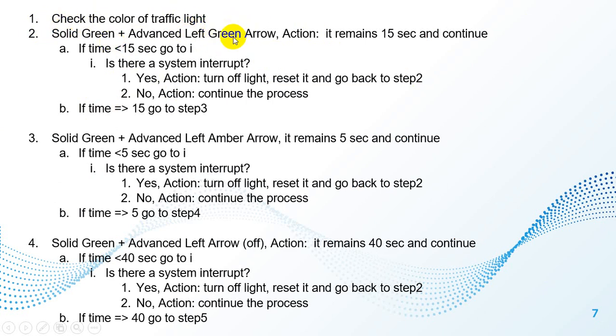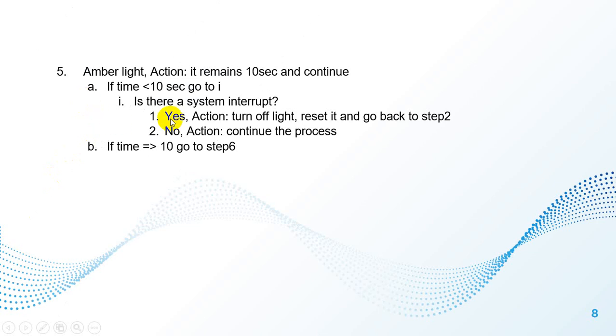You can assume that the first state we have is green and also advanced left green arrow. The timer should be checked. One of the states is less than 25 and the other one is more than 25. It's the same for step 3, steps 4, and steps 5.